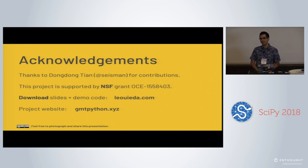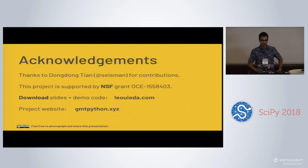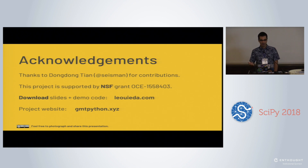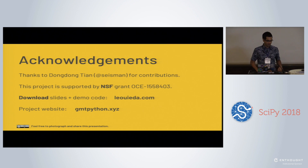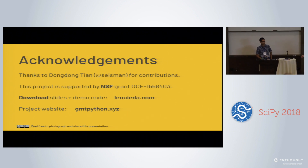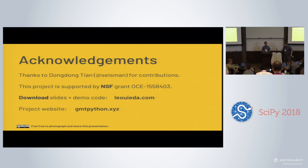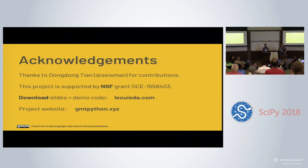A few acknowledgements: thanks to Felipe and Mike Herney for helping out during the sprints last year. Felipe is also like the Amazon Dash button, and I've used that quite a lot this past year. Big thanks also to Dong Dong Tian for many contributions to the Python code. This project is supported by an NSF grant, which pays my salary as a postdoc. You can download the slides and find links to the demo code on my website, and the project website is gmtpython.xyz. Thank you very much.